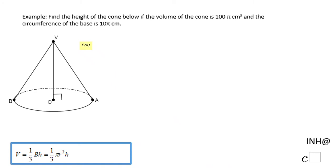Welcome or welcome back, I need help at C square. In this example we have a cone and we know the volume of this cone is 100π cubic centimeters and also know the circumference of the base is 10π, and we need to find the height of this cone.